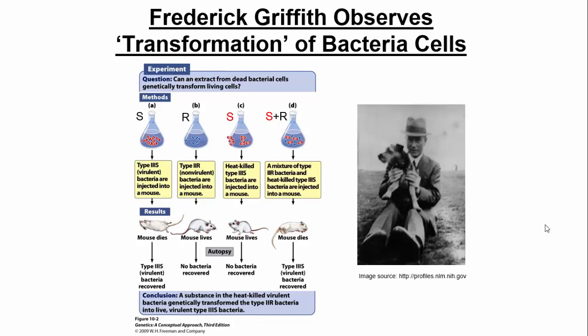We're talking about transformation within a generation. He showed this in bacteria using a streptococcus bacteria, and he had two types. The first type was the type 3S, which was a deadly type. If you injected this bacteria into mice, the mice would die, and you would recover this deadly bacteria from the mouse's bloodstream — the idea being that it replicated out of control and killed the mouse. The other type was the 2R type, a subtype of the streptococcus bacteria.